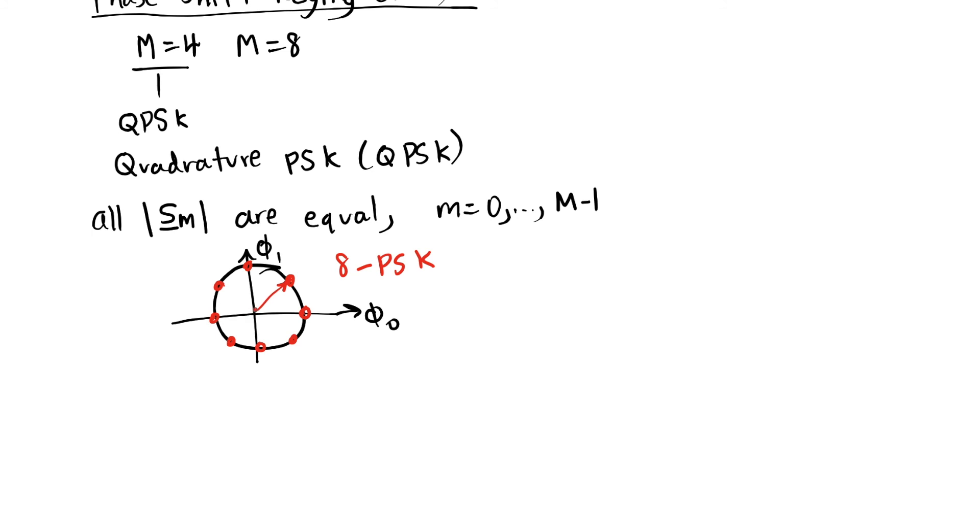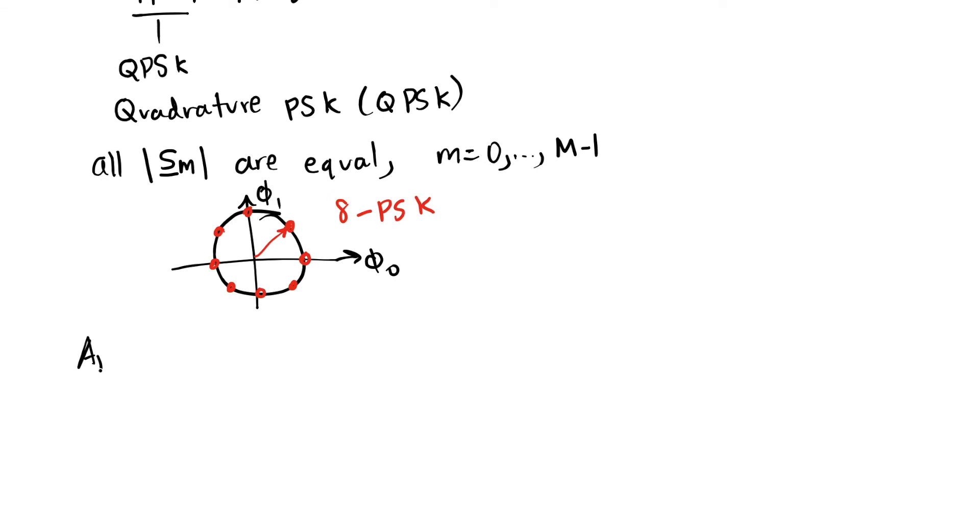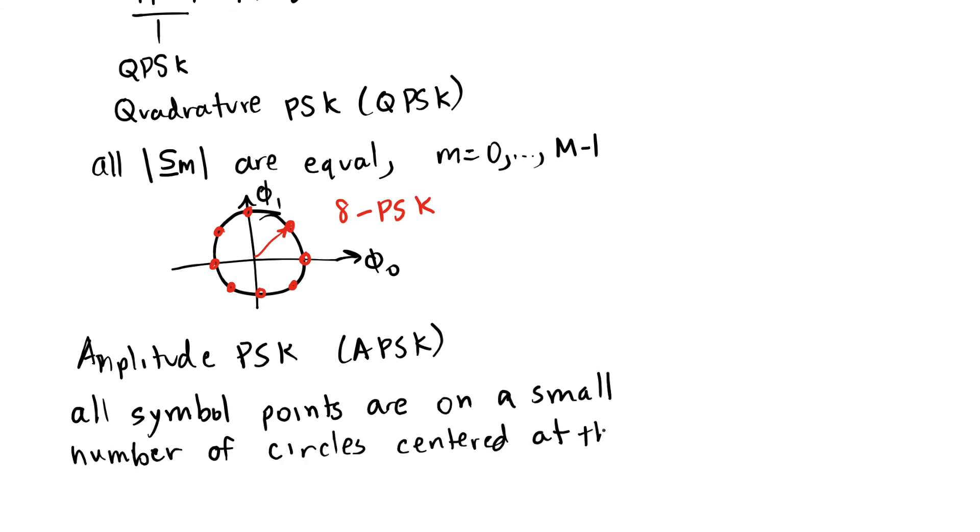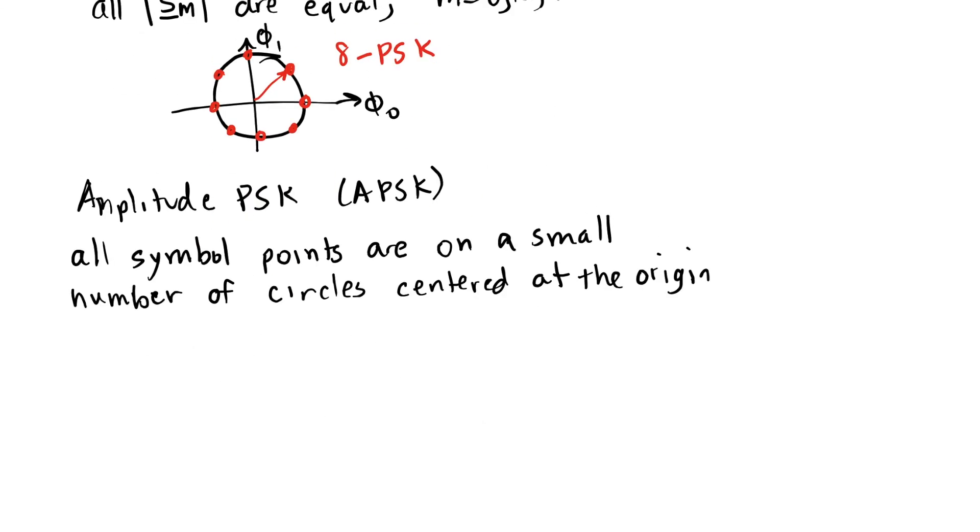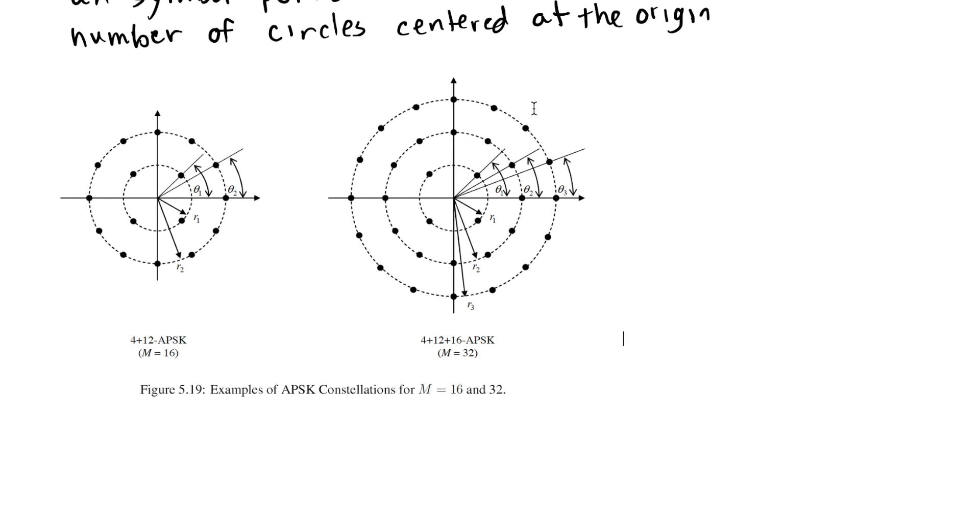And that's the reason why we do PSK would be because the symbol amplitude is always about the same. It makes amplifiers able to be a little bit more efficient. We have other modulations which are called amplitude phase shift keying or APSK. All symbol points are on a small number of circles centered at the origin instead of just one circle like PSK. And Rice figure 5.19 plots a couple of these different PSK modulations. You can see that the characteristics would need to be specified.